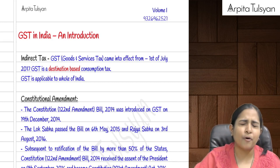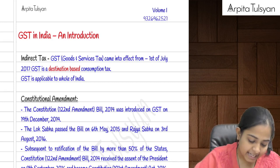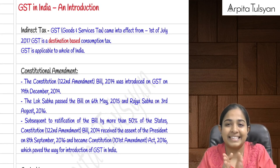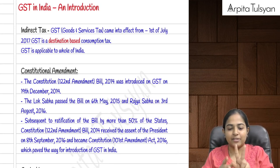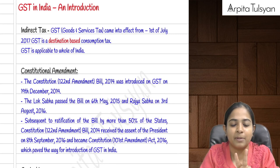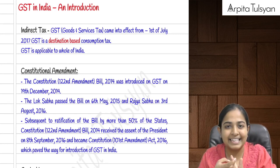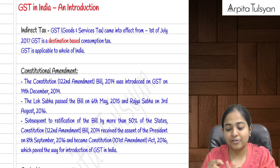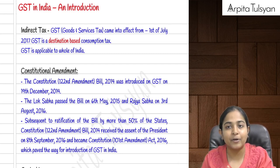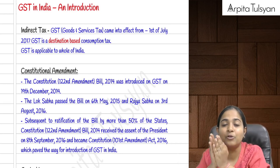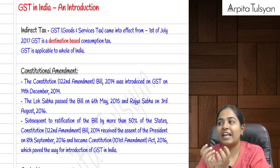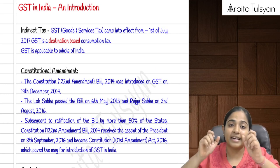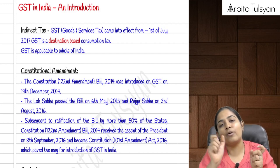Even Jammu and Kashmir was made applicable from 8th July 2017. This particular tax is a destination-based consumption tax. Two terms are very important here: first is destination tax, and the other is consumption-based tax. Destination tax means wherever the goods are finally consumed, the revenue of the GST belongs to that particular state government.